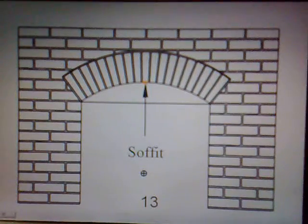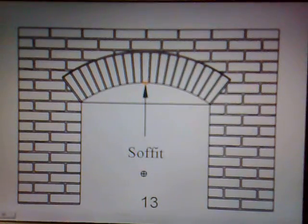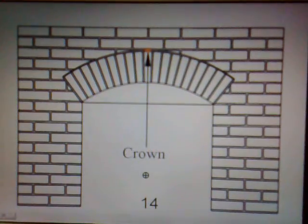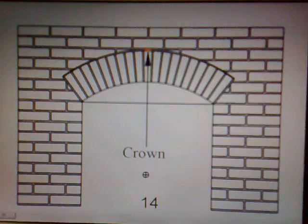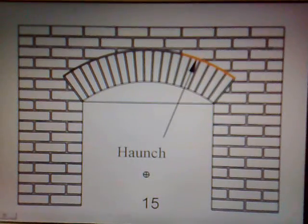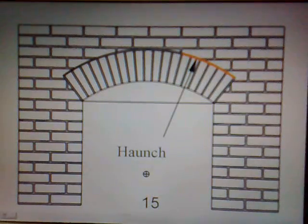Twelve: the extradose — this is the external or top curve of the arch. Thirteen: the soffit — this is the underside of the arch. Fourteen: the crown — this is the highest point on the extradose. Fifteen: the hunch — this is the lower toward of the arch.